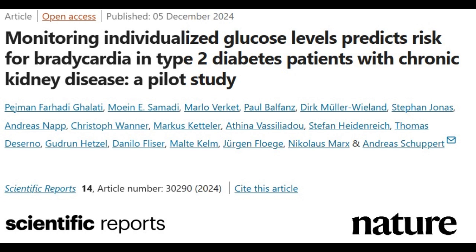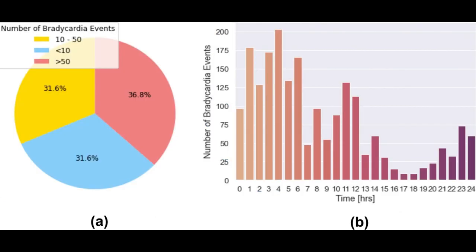By simultaneously monitoring interstitial glucose and electrocardiogram over a seven-day period, researchers investigated the occurrence of bradycardia in 85 insulin-treated patients. Bradycardia episodes were identified in 19 of the 85 patients — 22% — and the episodes were strongly linked to relative glucose levels.